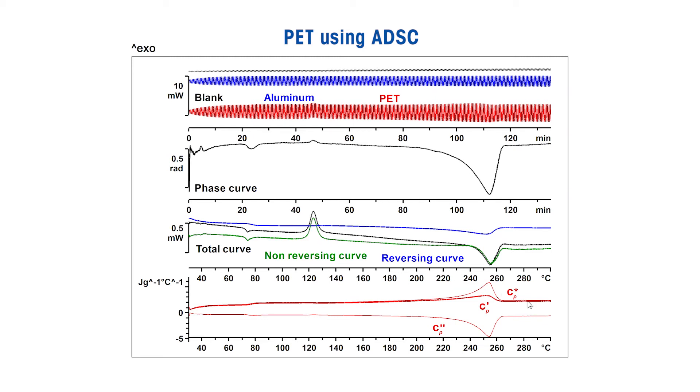The complex heat capacity is measured from the ratio of the amplitudes of the heating rate and heat flow, and the corrected phase angle between both properties. The in-phase and out-phase components of the complex heat capacity can be determined from the phase curve.